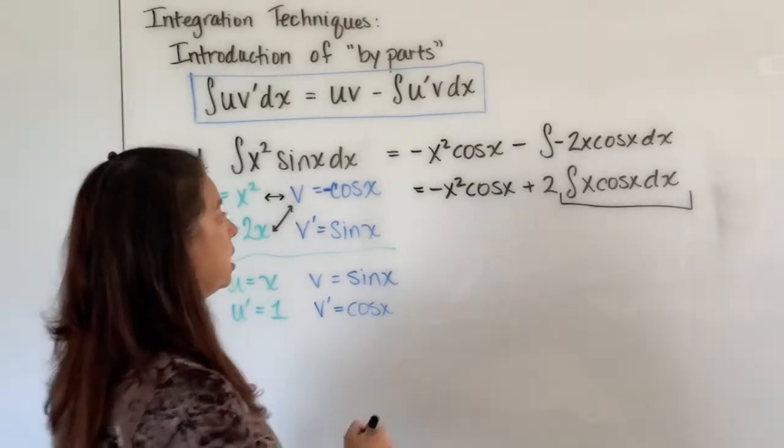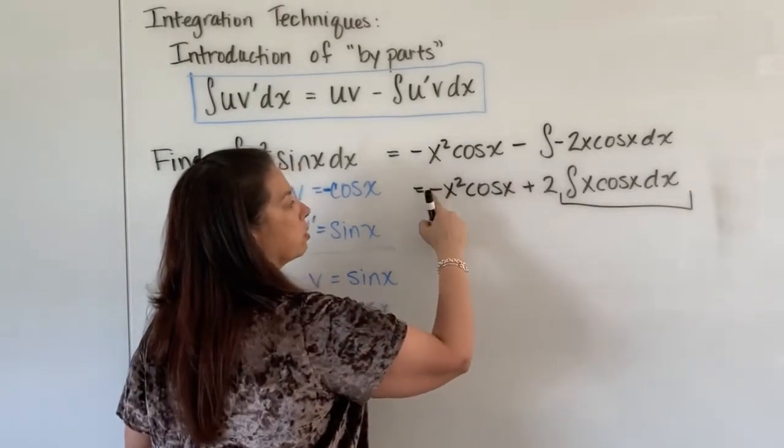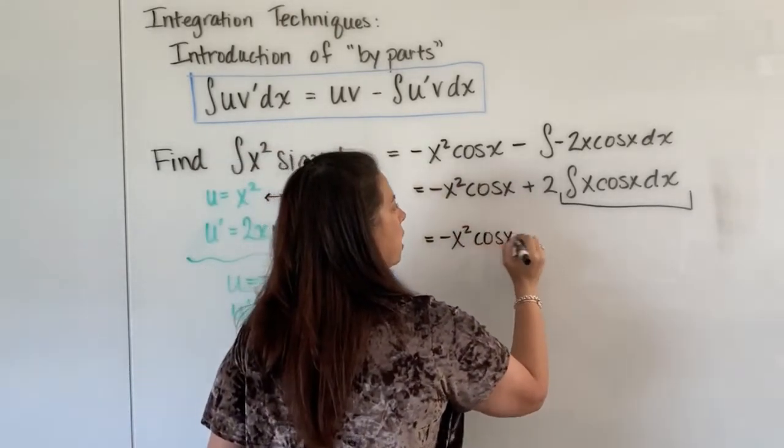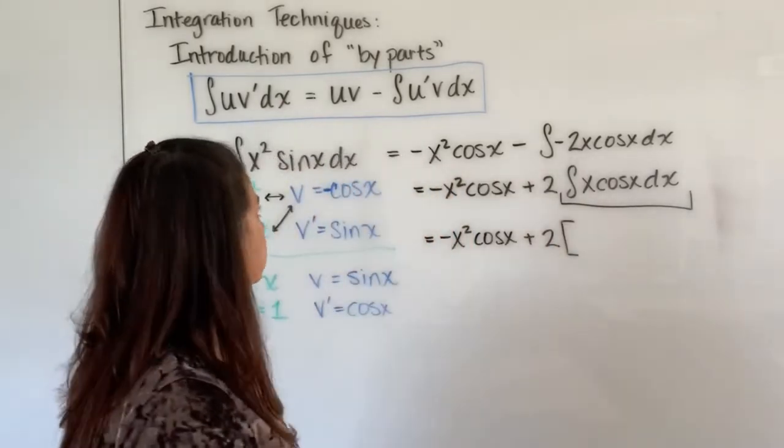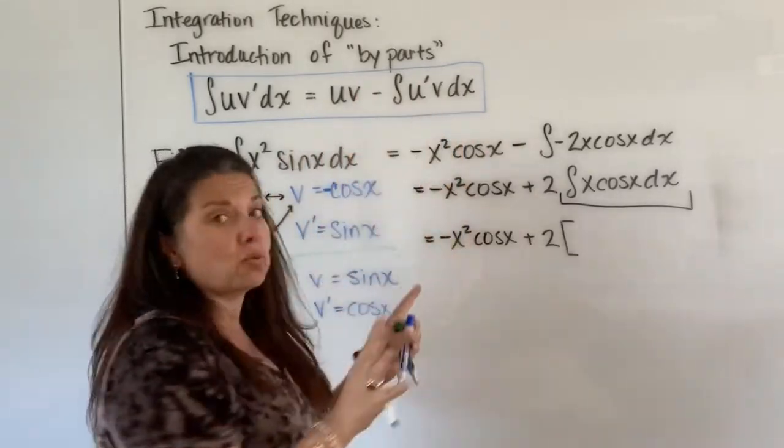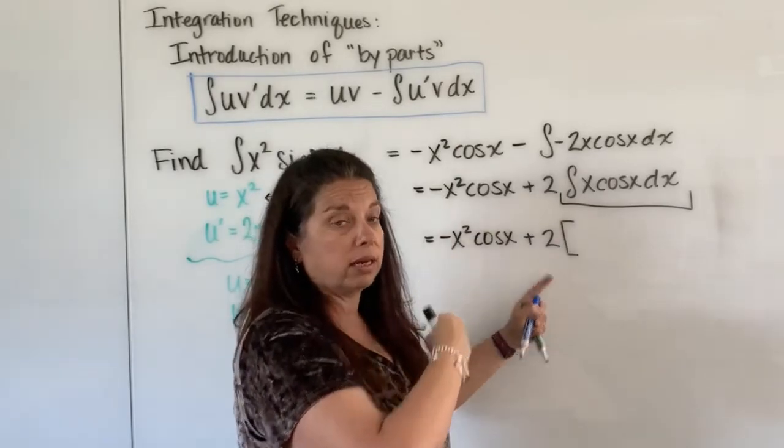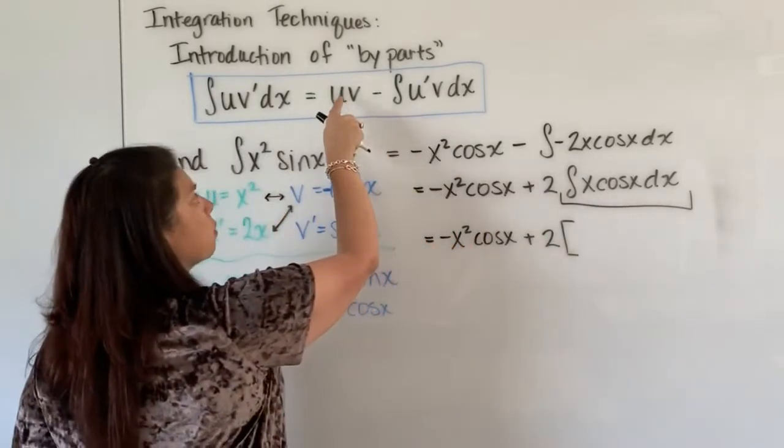So we go back up to the problem and we continue on so I say okay just drop this term down, just rewrite that negative x squared cosine x plus two times and I'm gonna put this in brackets because according to the by parts formula I'm gonna have two components here and I just want to be very careful that I tell the world that I had a two out there in the beginning.